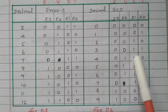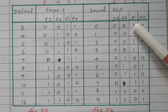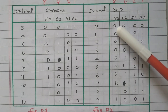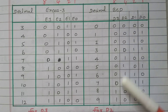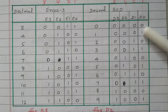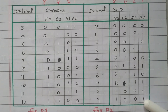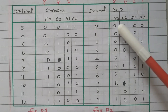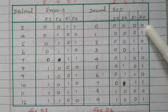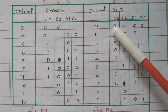For BCD outputs D0, D1, D2, and D3, we need to frame the minimized Boolean function using the K-map. The truth table values are plotted in the K-map, and by grouping the cells we get the minimized expressions for D3, D2, D1, and D0.